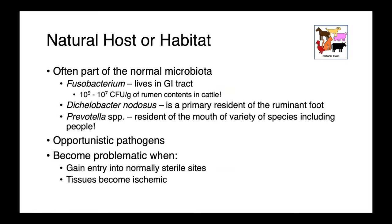The non-spore-forming anaerobes are oftentimes part of the normal microbiota. Fusobacterium lives in the gastrointestinal tract — and remember, anaerobes stink and feces stinks, so finding them there is not so surprising. Fusobacterium is also commonly found in the rumen of cattle, with 10^5 to 10^7 colony-forming units per gram of rumen contents. Diclobacter nodusis is a primary resident of the ruminant foot, and Prevotella species are found in the mouths of many different animals, including people. These are all opportunistic pathogens that become problematic when they gain entry into a normally sterile site and when tissue becomes ischemic — losing blood supply and oxygen tension — allowing the bacteria to thrive and grow.